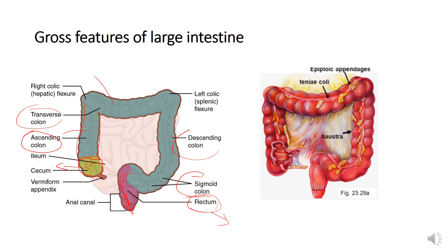One feature of the colon is the presence of taenia coli — three bands of longitudinal muscles lying outside the colon. The diameter of the colon is larger and there are sacculations in the wall of the colon.